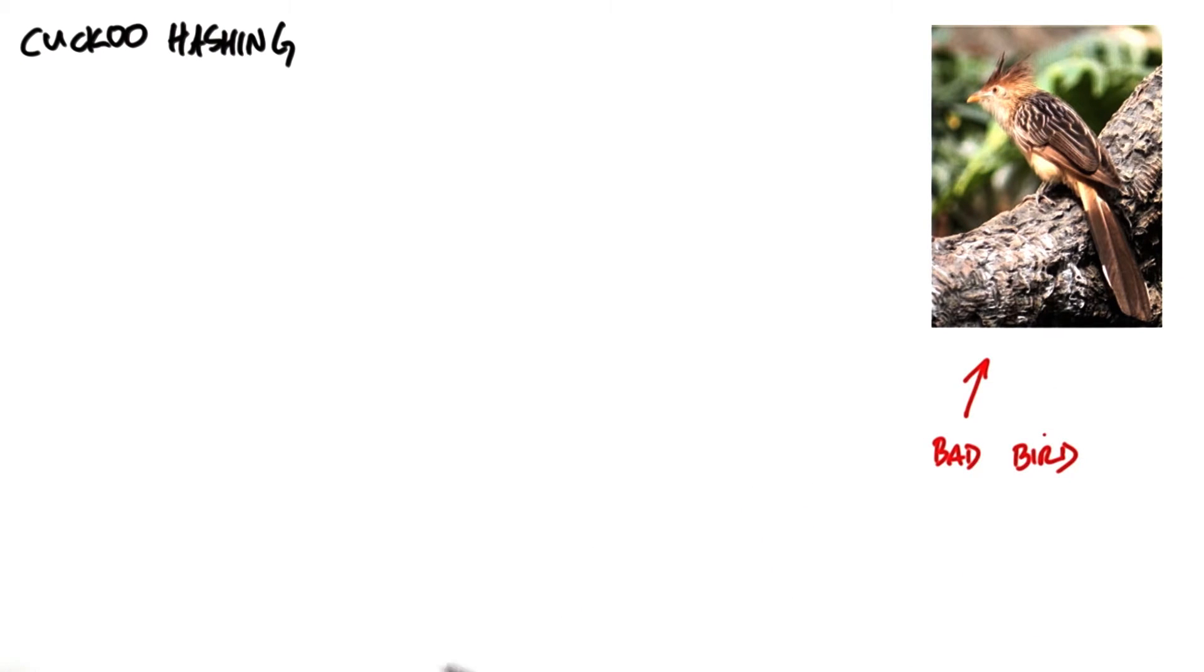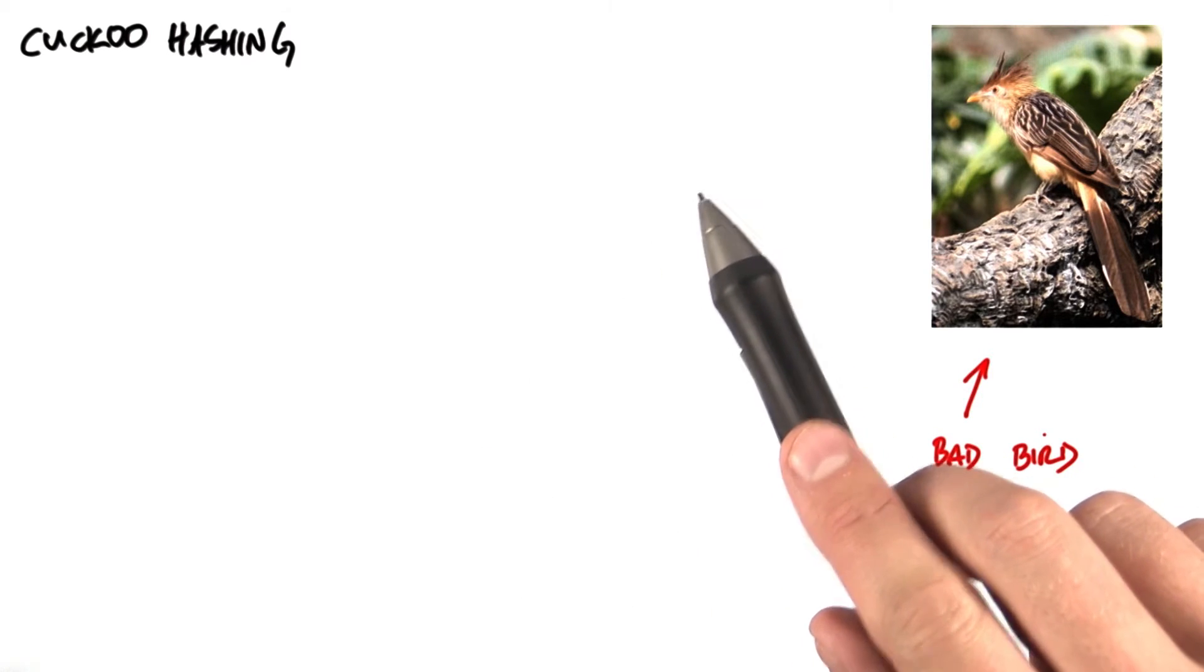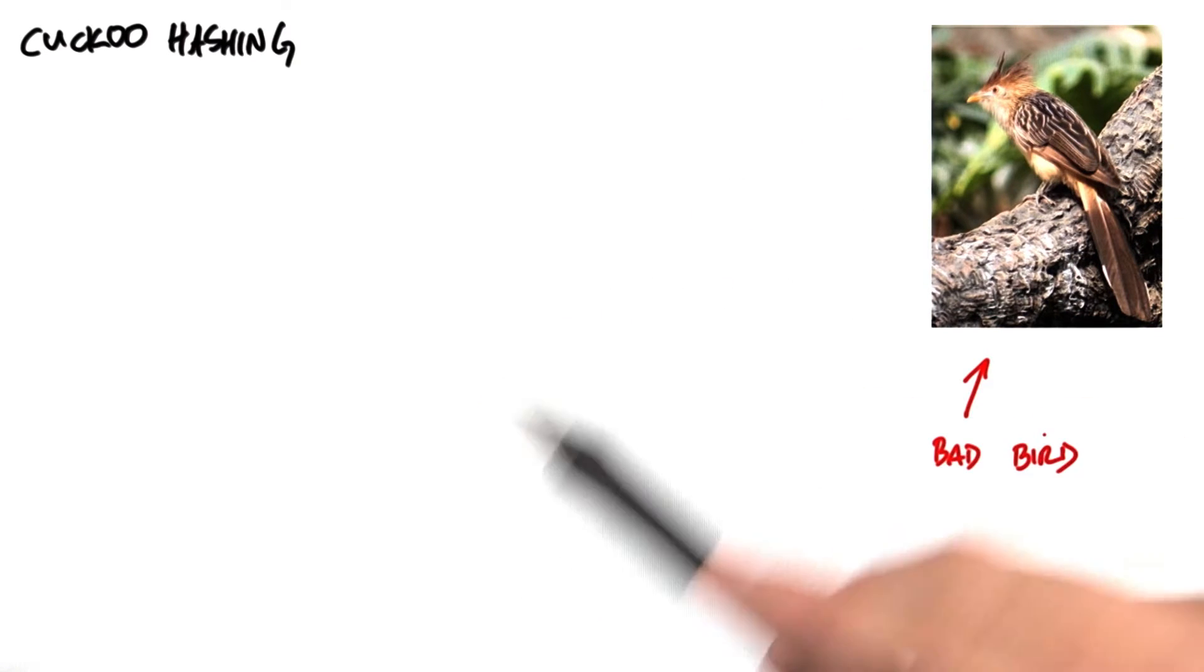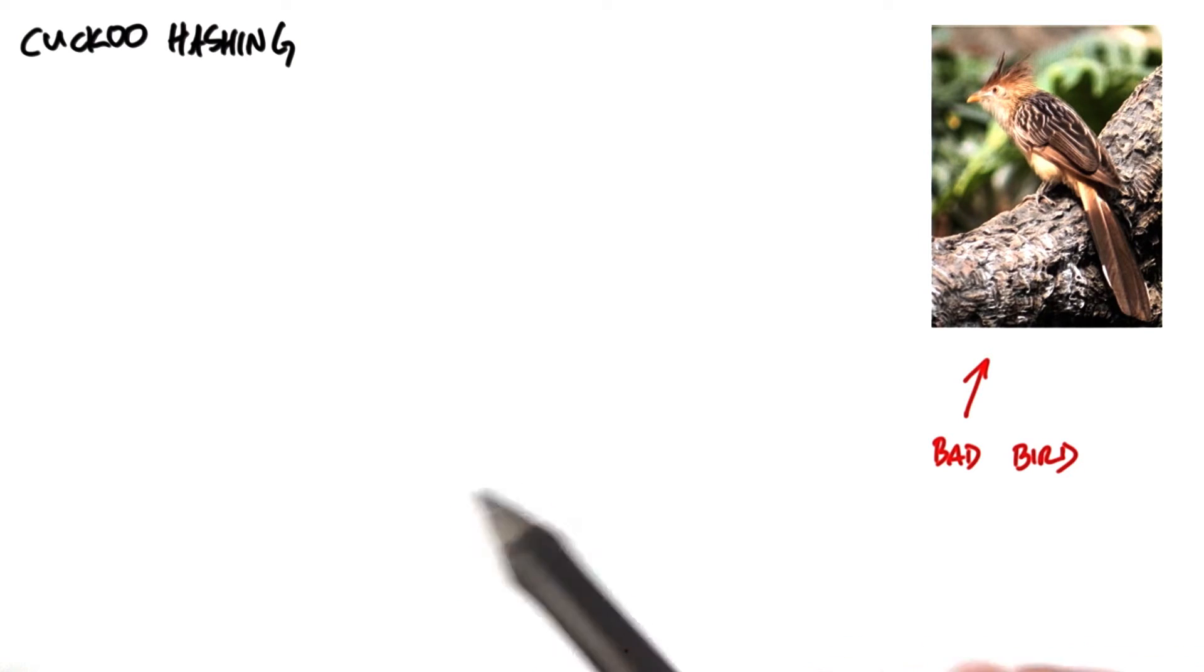Rather than take care of its own eggs and chicks, it instead lays its eggs in another bird's nest, throwing out the other bird's eggs to make room, and lets the other bird raise its chicks. See if you can detect why the algorithm I'm about to describe is called cuckoo hashing as I describe it.